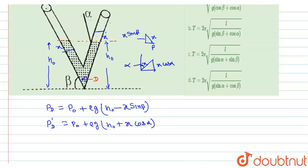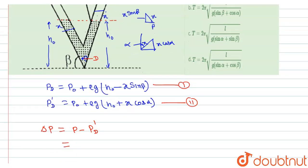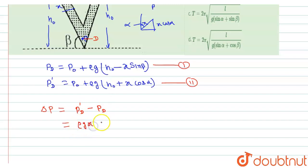The pressure difference ΔP equals P_D' minus P_D. Since P_D' is greater, we get ΔP equals ρgX(cosα + sinβ).